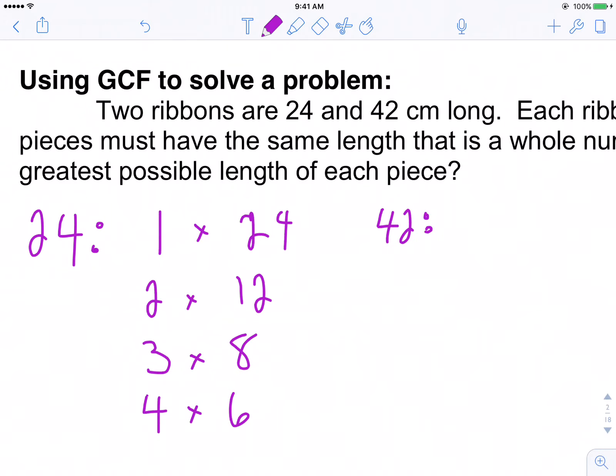And then I do 42. 42 is 1 times 42. It's 2 times 21, 3 times 14, 4, 5, 6 times 7. There are my factors for 42.